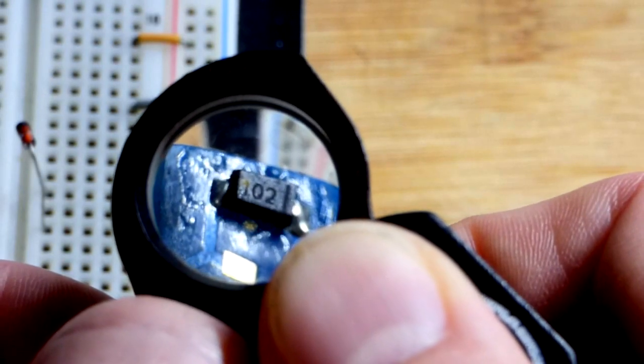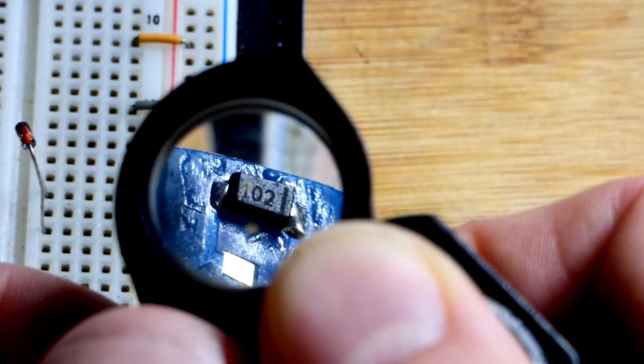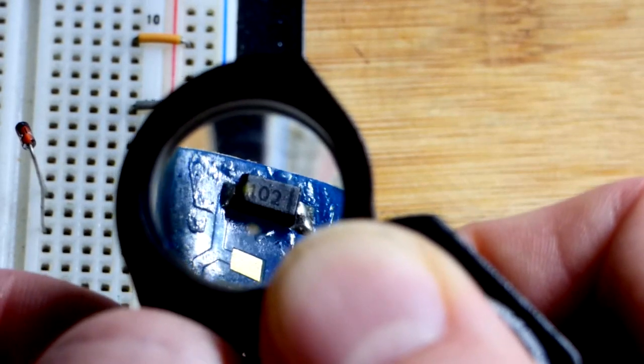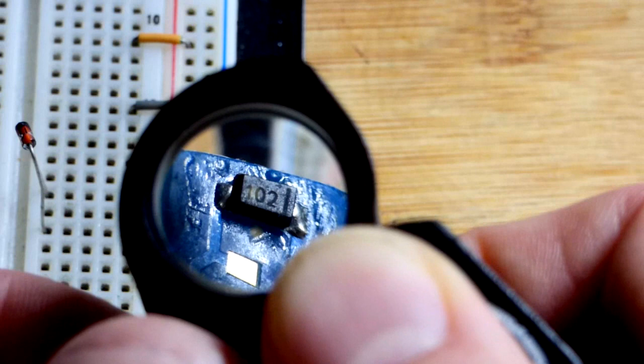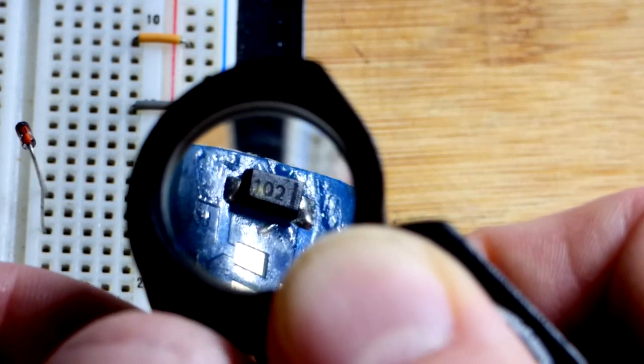In this video, we're going to look at the current regulator diode right there. It's not actually a diode, even though diode is in the name, be aware of that. But you can see it says 102, that stands for 1000 microamps, which is the same as 1 milliamp.